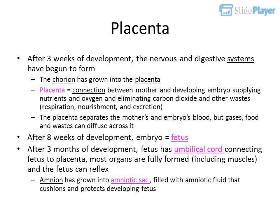After eight weeks of development, the embryo is called a fetus. After three months, the fetus has an umbilical cord connecting it to the placenta, and most organs are fully formed, including muscles, so the fetus can reflex. The amnion has grown into the amniotic sac, filled with amniotic fluid that cushions and protects the developing fetus.